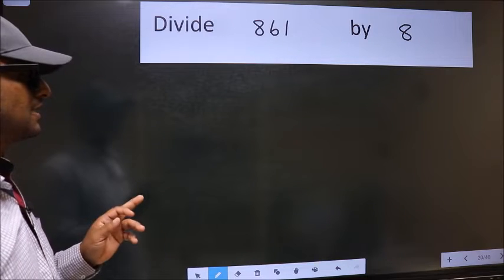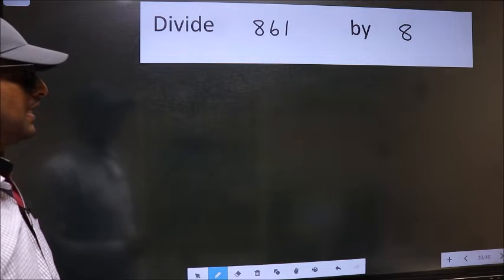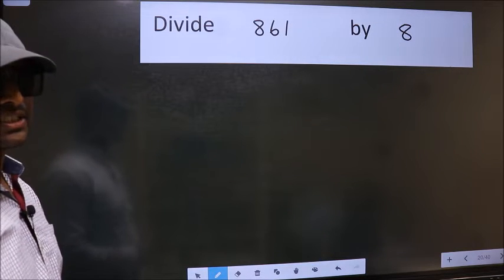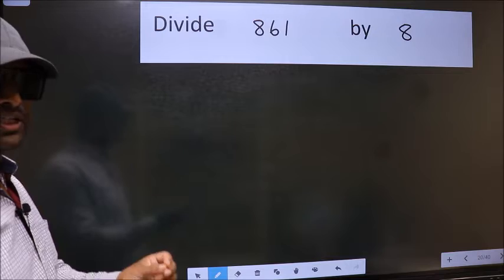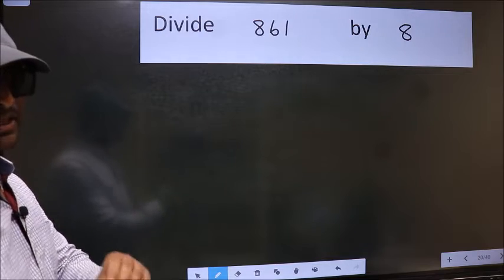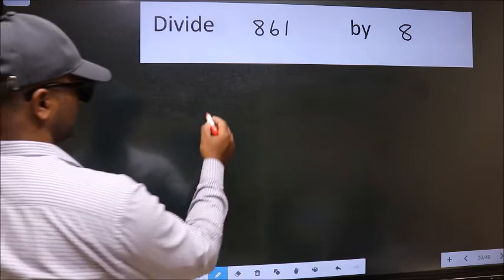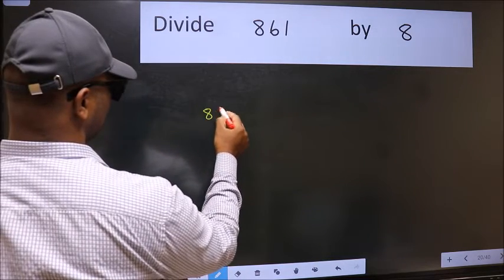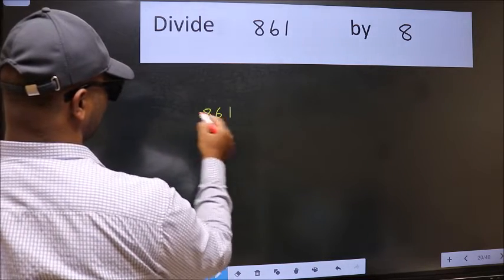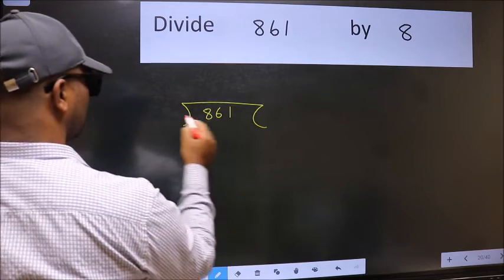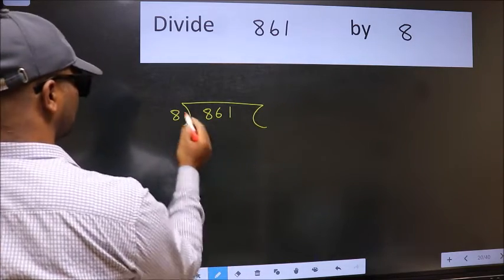Divide 861 by 8. To do this division, we should frame it in this way: 861 here and 8 here.